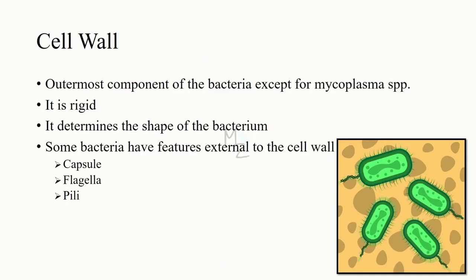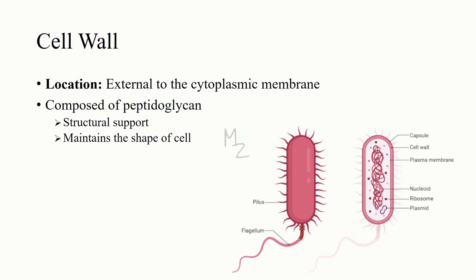The cell wall is the outermost component common to all bacteria, except mycoplasma species, which are bounded by a cell membrane, not a cell wall. The shape of a bacterium is determined by its rigid cell wall. Some bacteria have surface features external to the cell wall, such as capsule, flagella, and pili. The cell wall is located external to the cytoplasmic membrane and is composed of peptidoglycan, which provides structural support and maintains the characteristic shape of the cell.